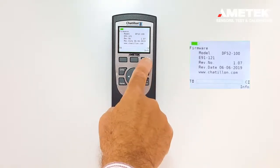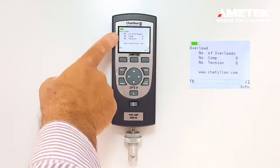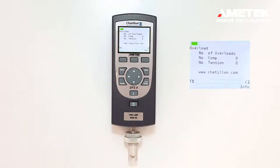Now if the information button is pressed again, we have the number of overloads. Whenever there's a load on the force gauge in tension or compression over 120%, an overload will be recorded either in tension or compression.